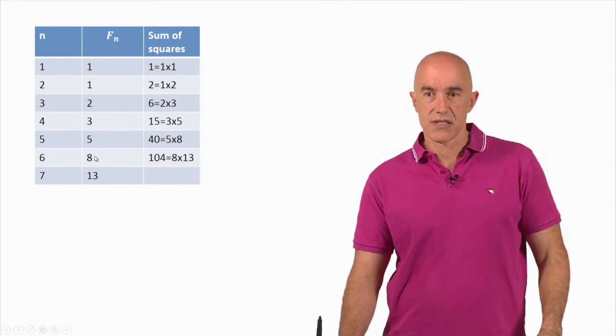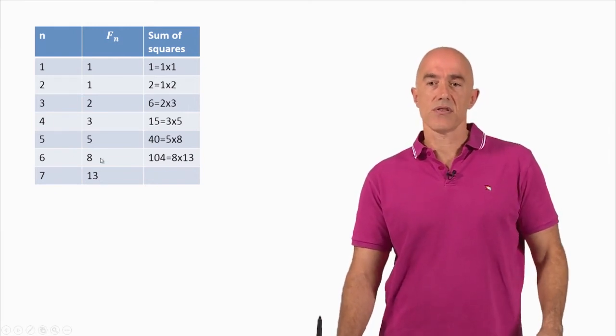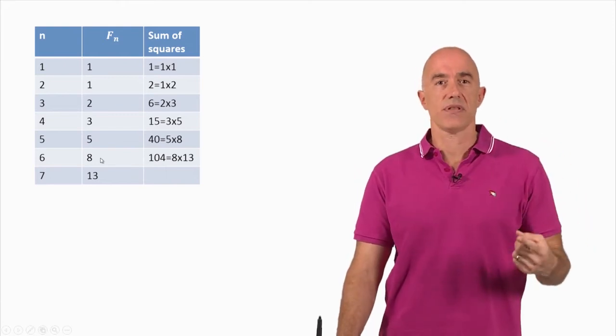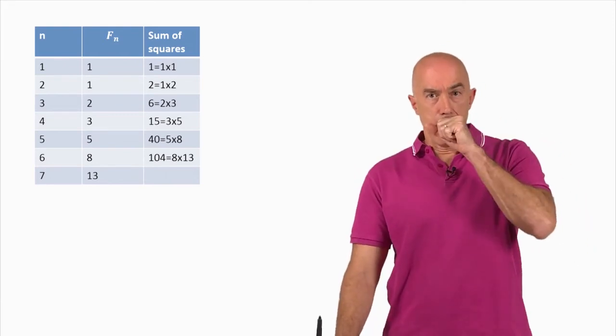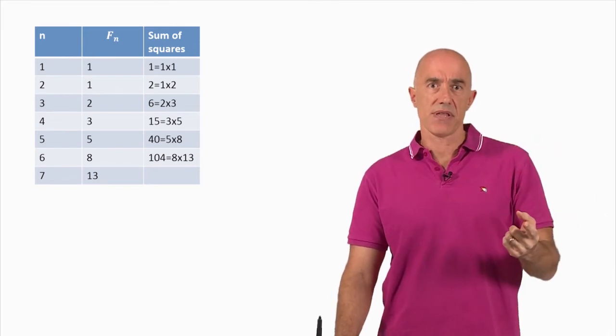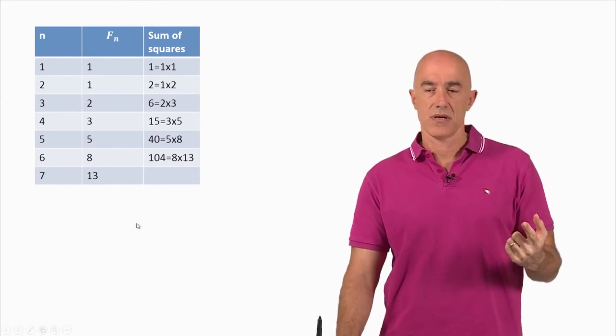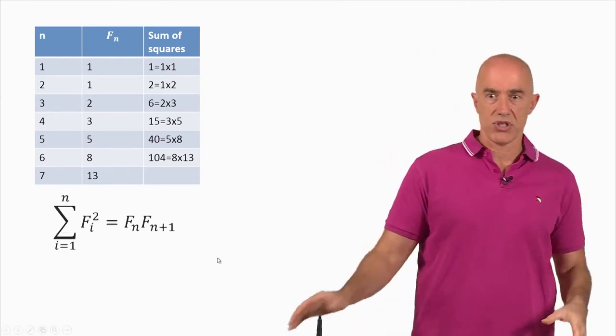So the sum over the first n Fibonacci numbers is equal to the nth Fibonacci number times the n plus 1 Fibonacci number. That's our conjecture.